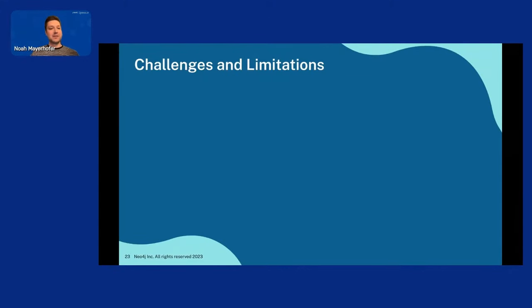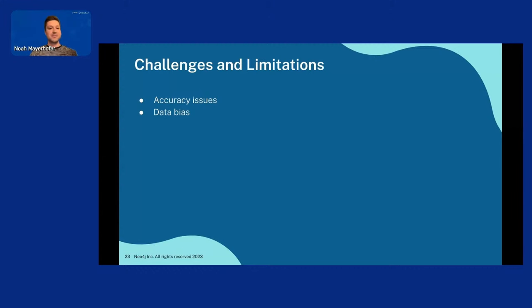Let me mention some challenges and limitations. First, accuracy issues — it didn't work perfectly, but we only spent a couple of weeks on this. It would be great to see someone work further on it. Second, data bias — we have to think about who wrote the source document, which can lead to a biased knowledge graph. Third, there are some leaps of faith between different steps in our pipeline where we trust the LLM output a lot. And finally, model limitations — the input length of the LLM requires us to do chunking, which might introduce errors into the process.